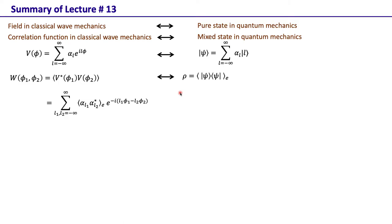Analogously in quantum mechanics, when there is randomness in the system — in addition to the intrinsic randomness a quantum system already has — when there is just intrinsic randomness we represent the state by a pure state, but when there is additional randomness we represent it by a mixed state.